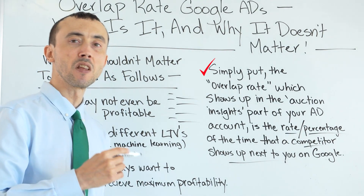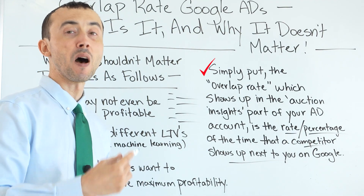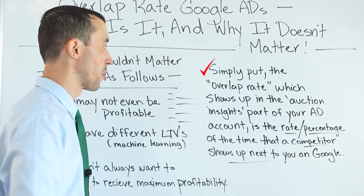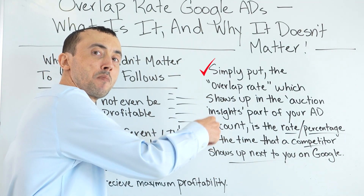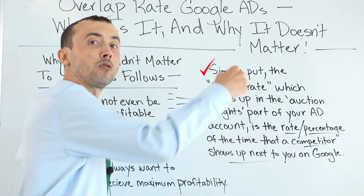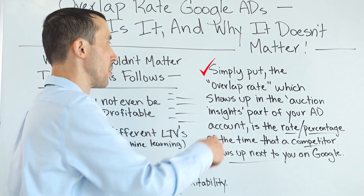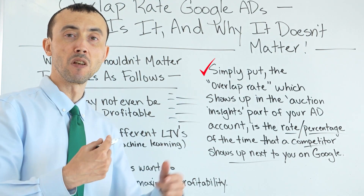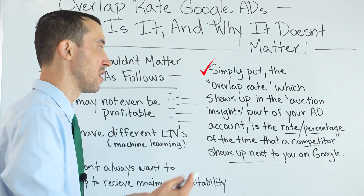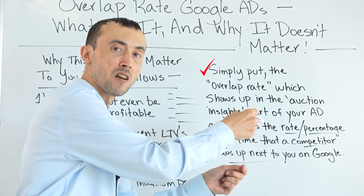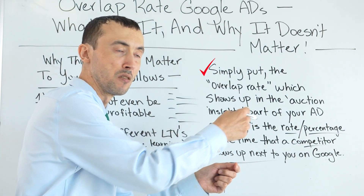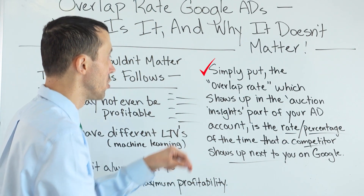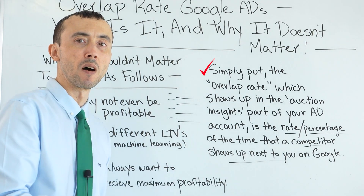This isn't a percentage of the time that it's possible to show up that you show up, but the percentage of the time that the competitor shows up and you also show up. Not to be confused with how many times you show up and the competitor shows up next to you — it's how many times the competitor shows up in which you also show up.